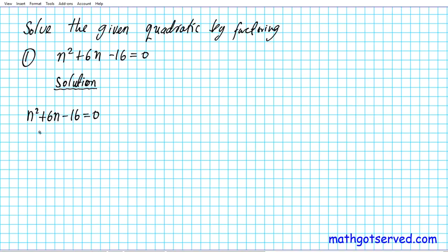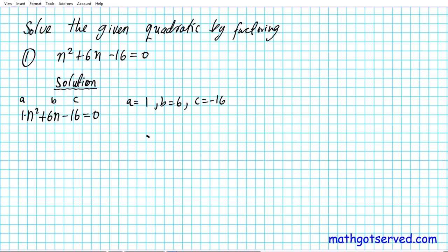To get started we need a, b, and c. Since this is already in standard form — written in descending order of degrees and set equal to zero — we identify the coefficients. For n squared there's no number in front, so the default coefficient a equals 1. Then b equals positive 6, and c equals negative 16. In the X game, a·c goes on the top and b goes on the bottom: a·c is negative 16 and b is 6.